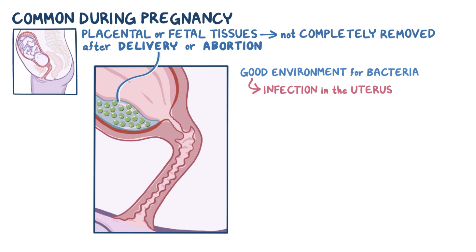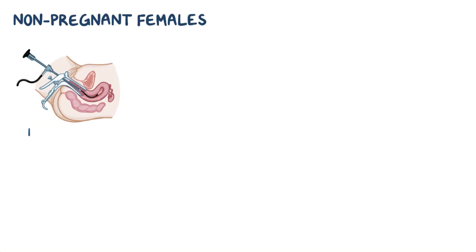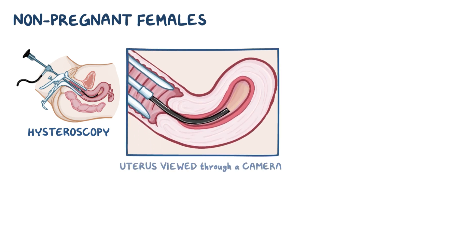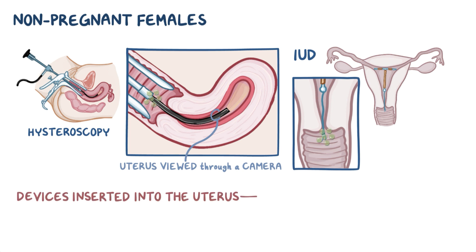Apart from childbirth, there are other factors that make it easier for bacteria from the lower genital tract to reach the endometrium, even in non-pregnant females. This can occur during hysteroscopy, where the inside of the uterus is viewed using a camera inserted through the vagina, and when there's an intrauterine contraceptive device, which has a thread that reaches down to the cervix or the vagina. When these devices are inserted into the uterus, they might introduce foreign bacteria accidentally.